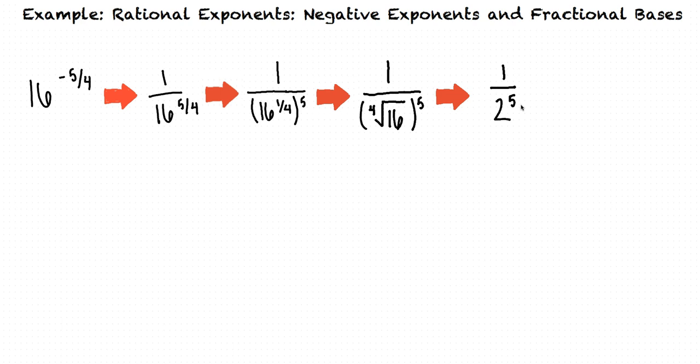2 raised to the fifth power equals 32 so our final answer is 1 over 32. Let's try another problem.